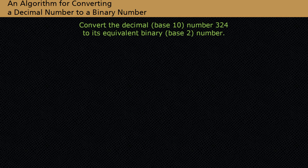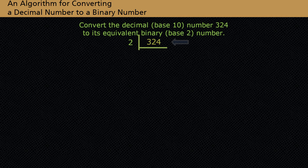Let's work through one more example of converting a decimal number to a binary number. Convert the decimal or base 10 number 324 to its equivalent binary or base 2 number. Start with the given decimal number. Divide 2 into 324. If we divide 2 into 324, we get a quotient of 162 with a remainder of 0.